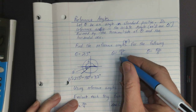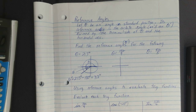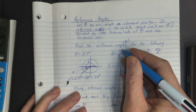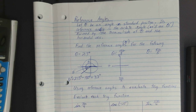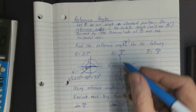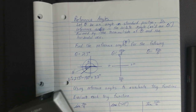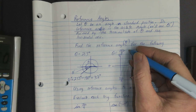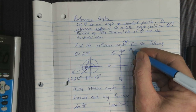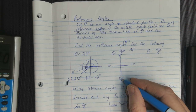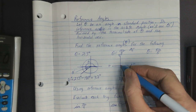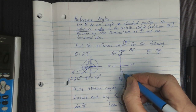Now for 14π/9 — remember, π/2 is here, π is here, 3π/2 is here, and 2π is here. To figure out where 14π/9 falls: 14/9 as a fraction — let me compare it to 3π/2, which is 27π/18. And 14π/9 is 28π/18, so it goes just slightly past 3π/2.